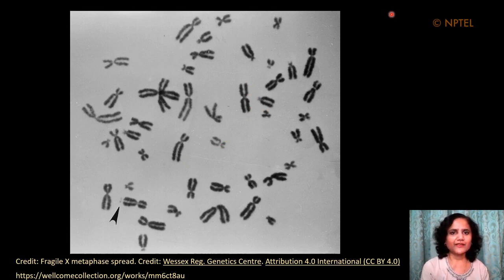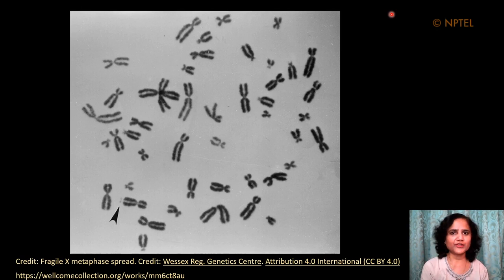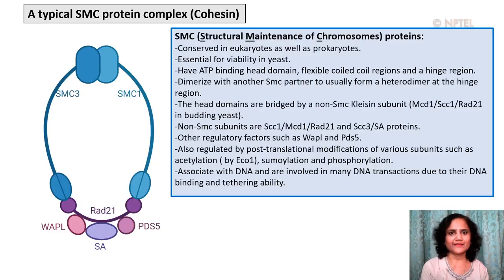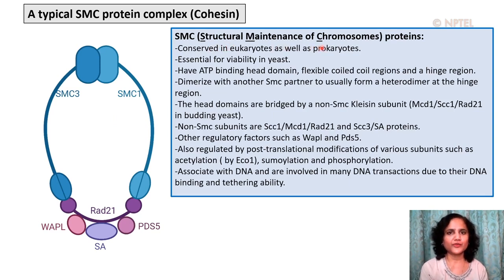Both of these structural attributes — condensation as well as sister chromatid cohesion — are dependent on SMC protein complexes, and both are very important for accurate segregation of chromosomes during mitosis. Shown here is a schematic of a typical SMC protein complex. SMC stands for structural maintenance of chromosomes.